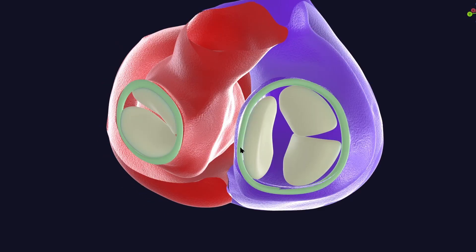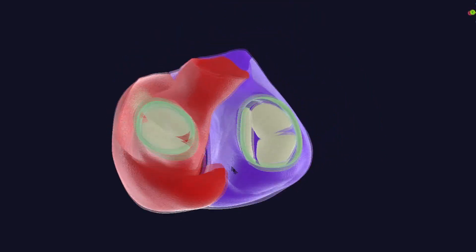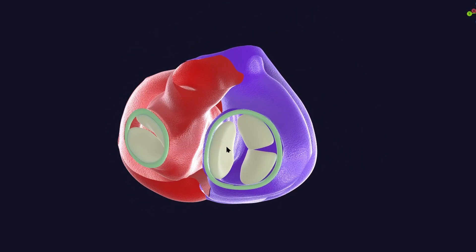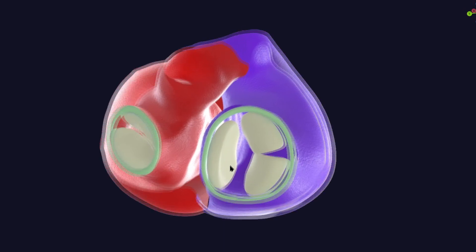I don't just want you to memorize that the right side has a 3-cusped valve — I want you to understand the logic behind this. In today's visual lecture we will explain why the right heart has a tricuspid valve and not a bicuspid valve, and vice versa. Hello, I am Dr. Azaz from medicovisual.com. Welcome to this visual lecture.